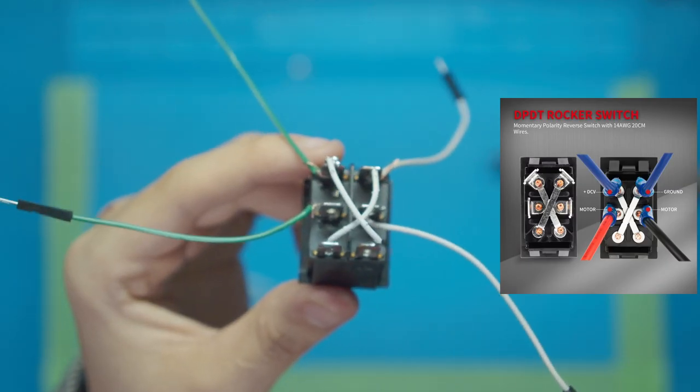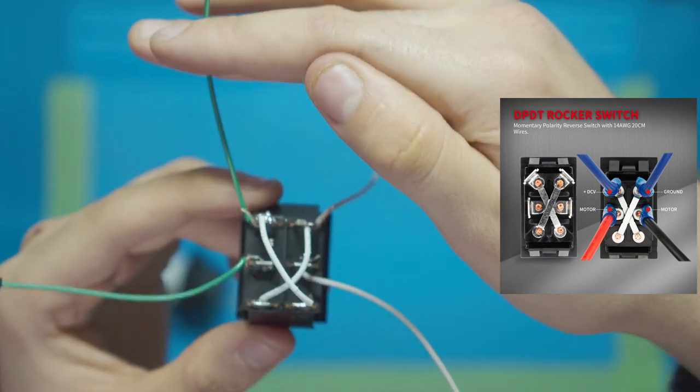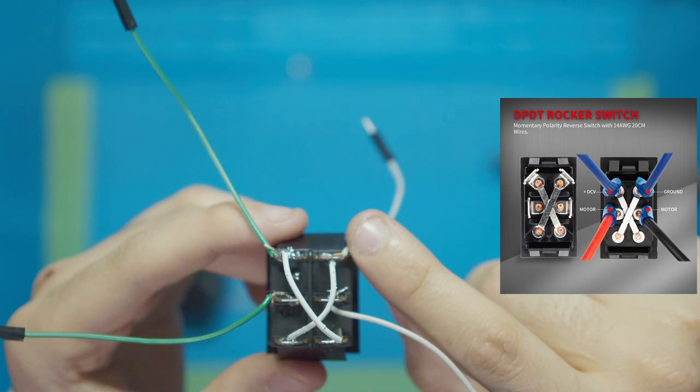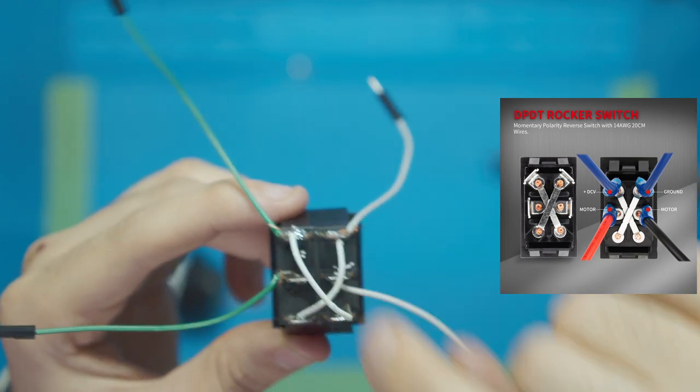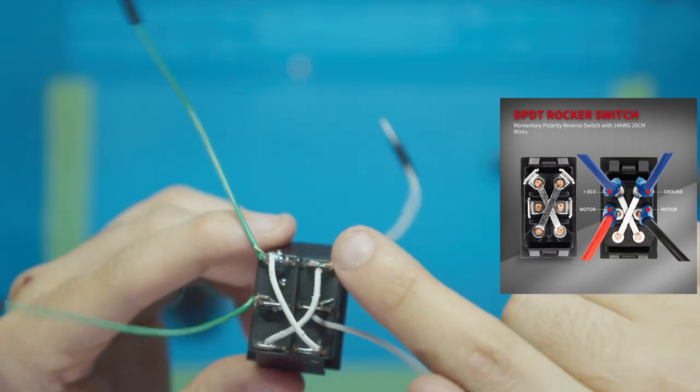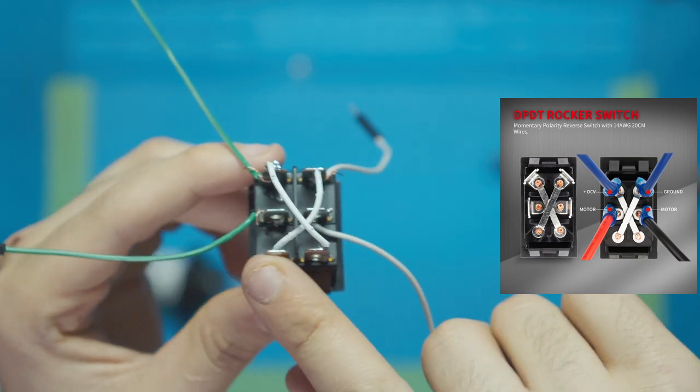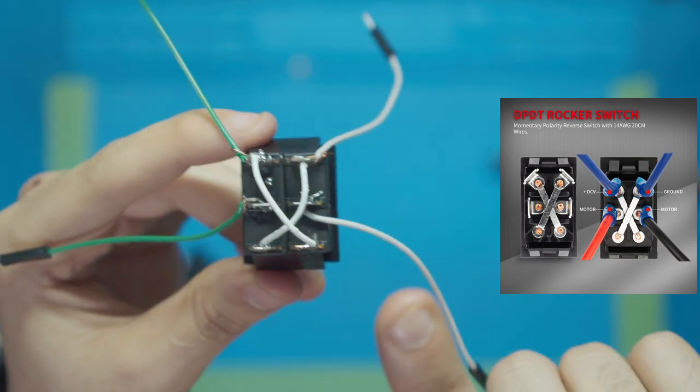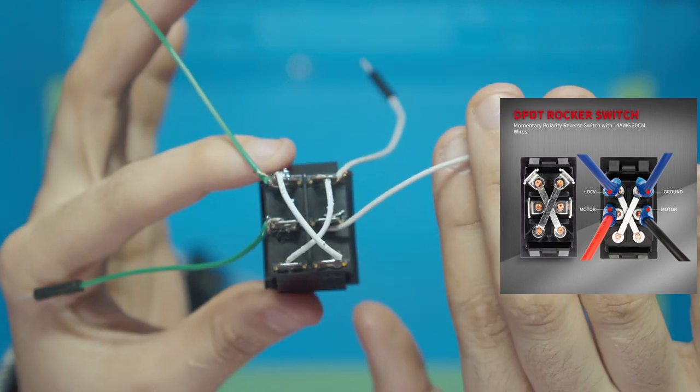So this is what the final product should look like. I have my one cable to my motor on pin one, my other cable to my motor on pin two, then from pin one to pin six is a cross, from pin two to five is a cross, and then on pin three and four we have the positive and negative of our power supply.